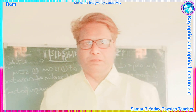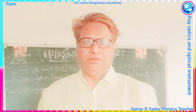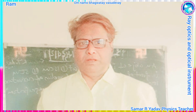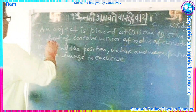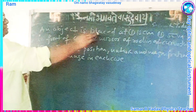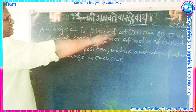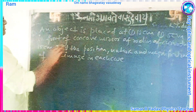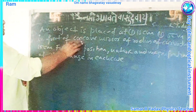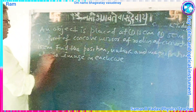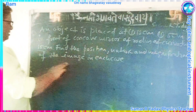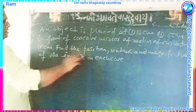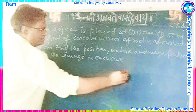Today in our chapter, Ray Optics, we come to see one numerical. The numerical is like this: an object is placed first at 10 cm, and second at 5 cm, in front of a concave mirror of radius of curvature 15 cm. Find the position, nature, and magnification of the image in each case.